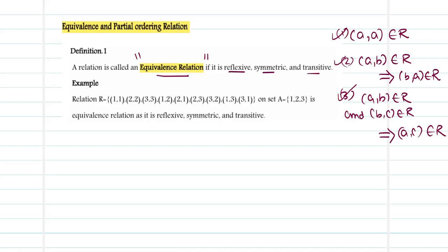Now let us check if the given relation on set A = {1, 2, 3} is an equivalence relation. First, for reflexivity, (A, A) must be there: (1,1), (2,2), (3,3) — are they here? Yes, (1,1), (2,2), (3,3) are inside. Next, whenever (A, B) is inside, (B, A) must also be there. (1,2) gives (2,1); (2,3) gives (3,2); (1,3) gives (3,1). All of them are inside, so it is symmetric in nature.